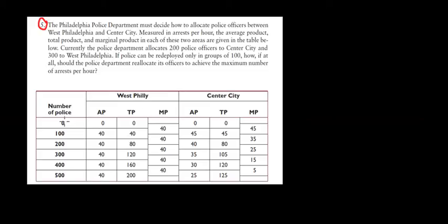Looking at the number of police: when there are zero policemen, there are zero arrests. For the first hundred police officers, the marginal product — the additional change in the number of arrests — is 40, which is also the total arrests for West Philly. In Center City, the total number of arrests is 45, a gain of 45 arrests relative to zero. So for the first hundred police officers, we're doing better in Center City. The first hundred police must go to Center City.